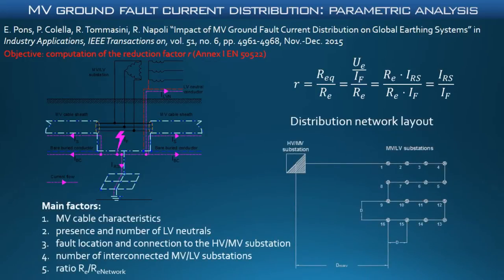For the parametric analysis, simplified distribution network layouts and different factors of influence, as the ones reported in the slide, are considered. According to the results of the simulations, the fault current reduction was always found remarkable. In many of the considered scenarios, just a few percent of the total fault current is injected into the soil through the earthing system of the faulted substation. For more details, I invite you to read the article titled 'Impact on medium voltage ground fault current distribution on global earthing systems,' published in IEEE Transactions on Industry Applications.